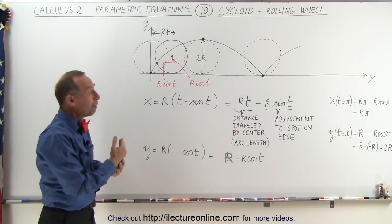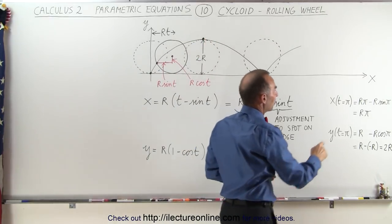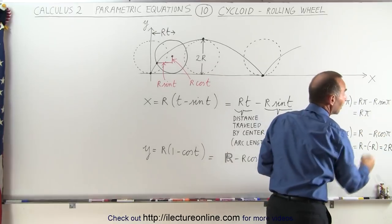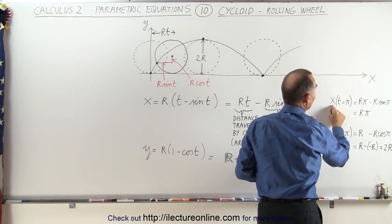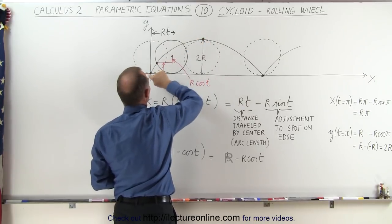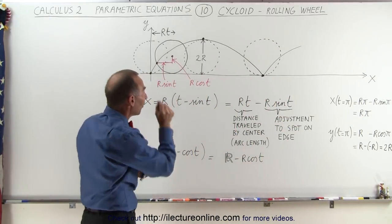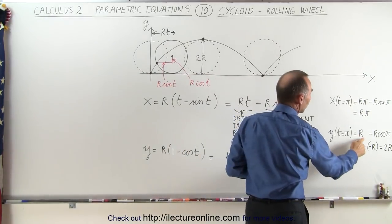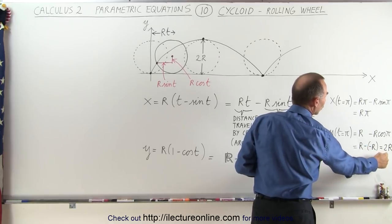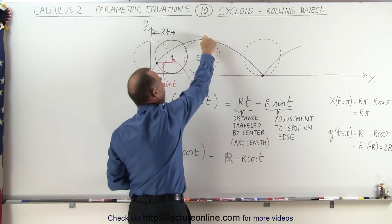To show how this works, let's say the angle is pi, so the wheel has turned through half a turn. The point will now be at the very top. If we plug t equals pi into the equations, x becomes r·pi minus r times the sine of pi. Since the sine of pi is zero, that term disappears, meaning the x position r·pi is exactly the same as the center position of the wheel. For the y value, it equals r minus r times the cosine of pi. The cosine of pi equals negative 1, so it becomes r minus negative r, or 2r. That means the point on the wheel is now 2r from the x-axis — at the very top.